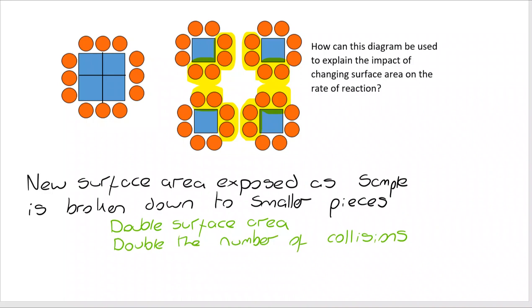And if I double the number of collisions that take place, I can double the number of successful collisions that take place. And doubling the number of successful collisions will double the rate of reaction. And again we've got double, double, double, double.